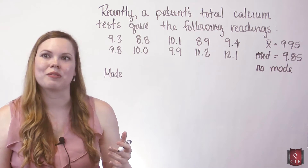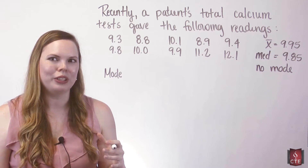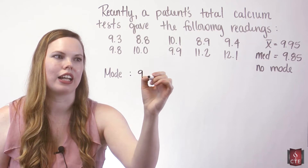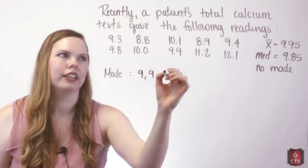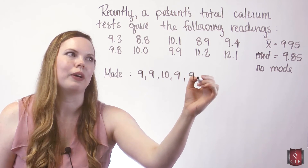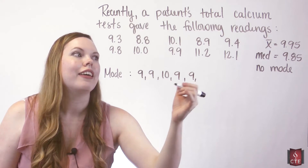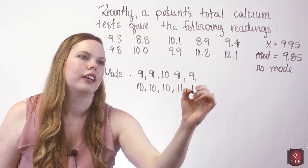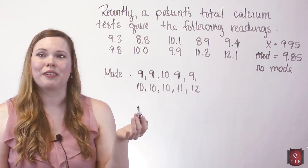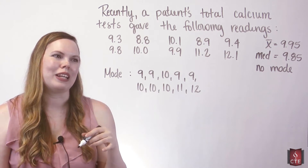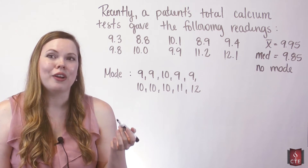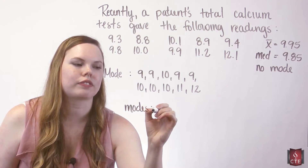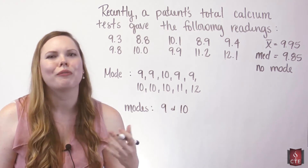Just to give you an example of mode, let's round this data to whole numbers. So 9.3 rounds to 9, 8.8 rounds to 9, 9.8 rounds to 10, and so on. The 11 and 12 are not repeated, but the 9 and the 10 are each repeated four times. So here we actually have two modes in the rounded data — we have a bimodal data set. Our modes are 9 and 10.